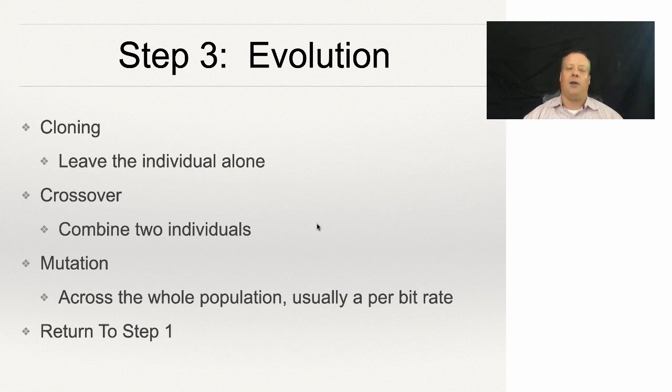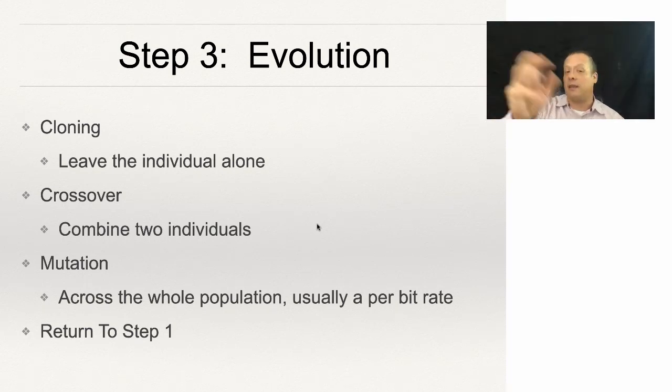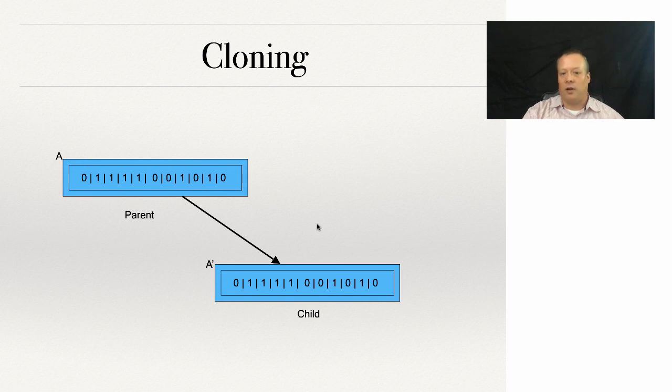We move that individual into the next generation. Then finally, we run mutation across the whole population, usually at a per-bit level, to add some new individuals, which means that the clones don't necessarily clone perfectly—sometimes they have small changes too. Cloning is exactly as it sounds: the child is the parent.